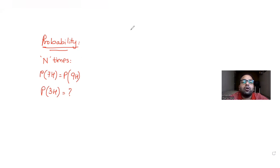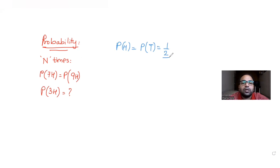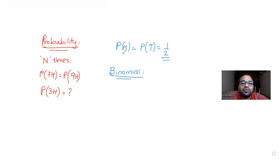If I toss a coin, I can get either heads or tails. Since this is an unbiased coin, the probability of getting heads and tails are equal to each other, and that equals half. So this becomes a case of binomial distribution, where probability of heads is the probability of success, which is 1/2, and probability of tails is the probability of failure, also 1/2.